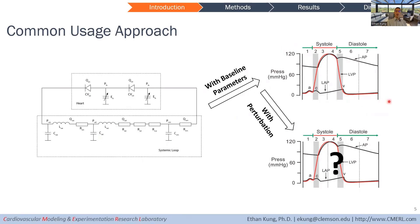If you're doing something like surgical planning, you would start from the baseline, make some perturbation in your model to describe the surgical procedure, and then see what the resulting physiology looks like. Our research is looking at this step — the question is: how do you come up with these baseline parameters?